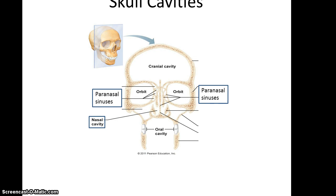The skull has quite a few cavities within it. You have the cranial cavity where the brain is kept, the two orbital cavities, the nasal cavity, the oral cavity, and a number of paranasal sinuses.